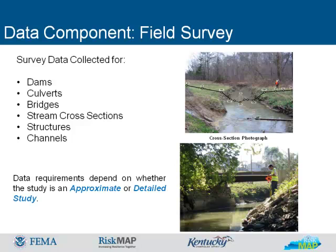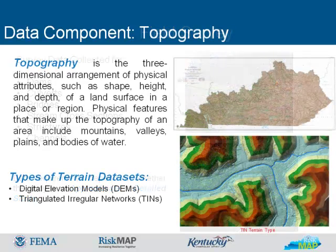Topography is the three-dimensional arrangement of physical attributes such as shape, height, and depth of the land's surface in a place or region. Physical features that make up the topography of an area include mountains, valleys, plains, and bodies of water. Applied to the mapping process, topology is a digital representation of terrain.